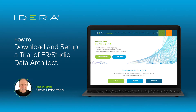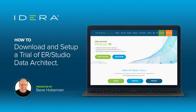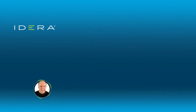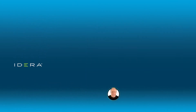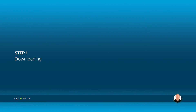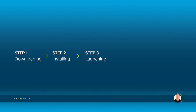Today, I'm going to show you how to download and set up a trial version of ER Studio Data Architect. There are five steps we are going to cover: step one, downloading; step two, installing; step three, launching; step four, registering; step five, customizing. Ready? Good.